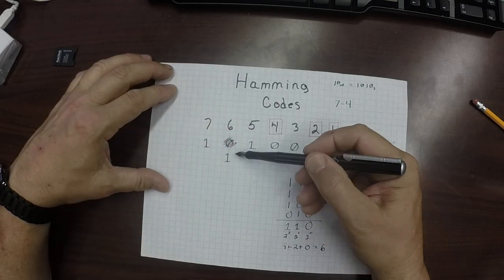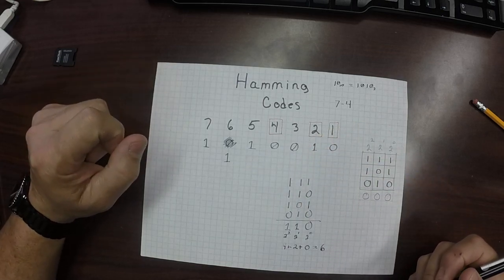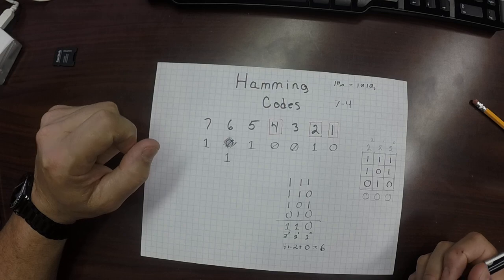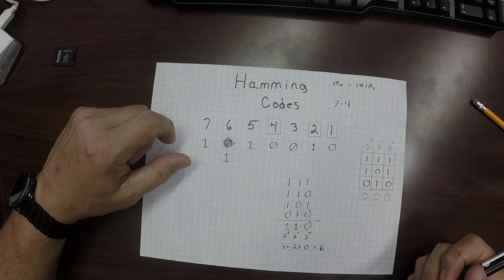And indeed, that is the bit that we changed, the 6 bit. And that is how Hamming code works. I hope you enjoyed this. I look forward to doing another lesson in computer organization for you.